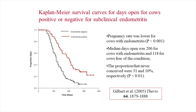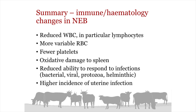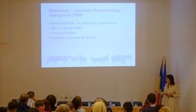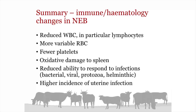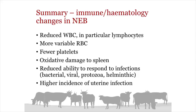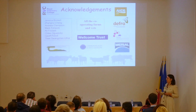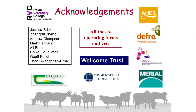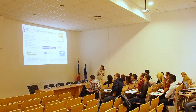In summary, what's going on in terms of negative energy balance, immune, and histological changes: reduced white blood cells particularly lymphocytes, more variability in red blood corpuscles, fewer platelets, oxidative damage to the spleen, and all of these together mean the animal is less able to respond to infections from various diseases, protozoa, and helminths — plus a higher incidence of uterine infection. That brings me to the end of the first talk. This work was done before the G plus E project started, and I'd like to acknowledge all the funders within the UK and Ireland and my group at the RVC who actually do all the work. Thank you.